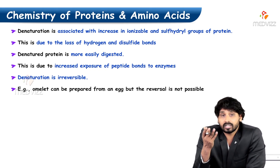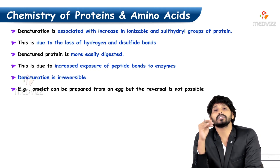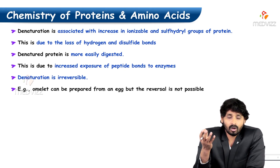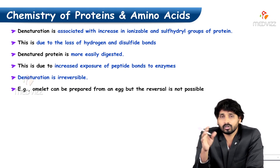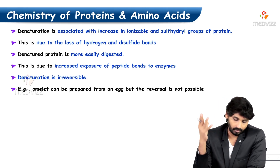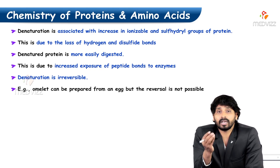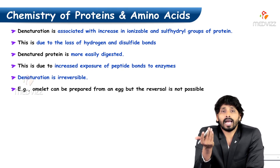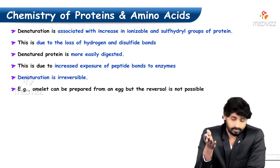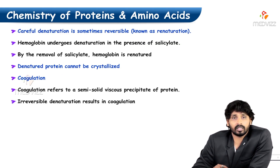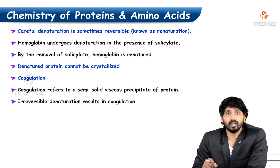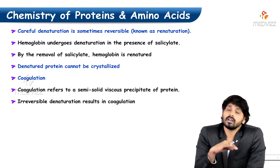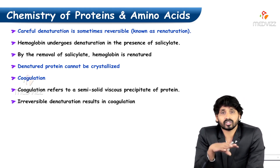Denaturation is generally irreversible. The best example is the egg, which contains albumin protein. When heated in a pan it is converted into an omelette, and we cannot convert the omelette back into an egg. However, in some cases using certain chemical agents, denaturation can be reversible — this is called renaturation. For example, hemoglobin undergoes denaturation in the presence of salicylate, but by removing the salicylate, hemoglobin is renatured and the structure reforms.